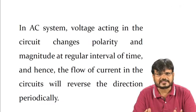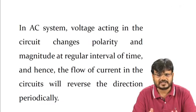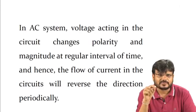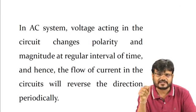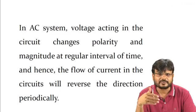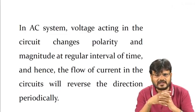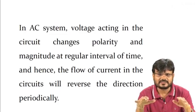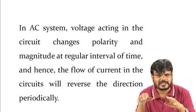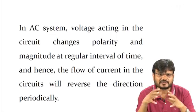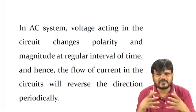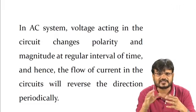In an AC system, the voltage acting in the circuit changes polarity. In the positive cycle the polarity is plus to minus, then it changes to negative. When you see the waveform of AC supply, it changes with respect to time ωt — in the positive half cycle the voltage is positive, in the negative half cycle the direction of current also changes.